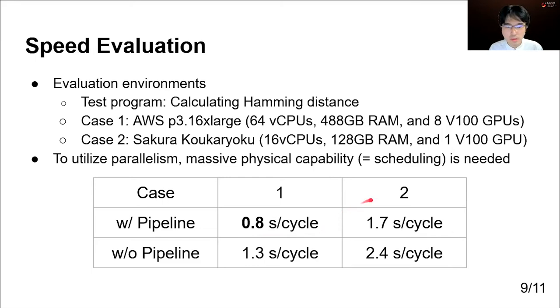As you can see, Case 2 is slower than Case 1. This is because Case 2 does not have enough physical capability to fully utilize all parallelisms. So, a scheduler like Iyokan to handle massive physical capability is needed.